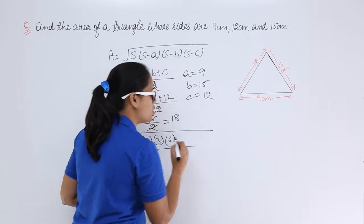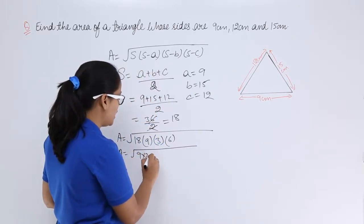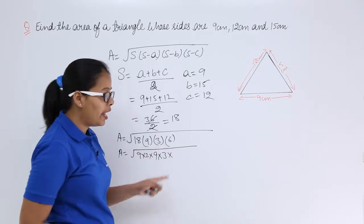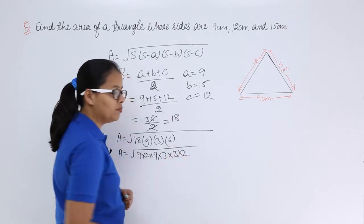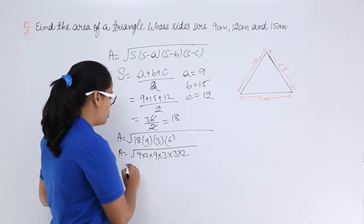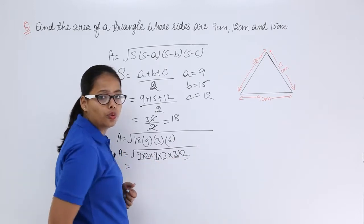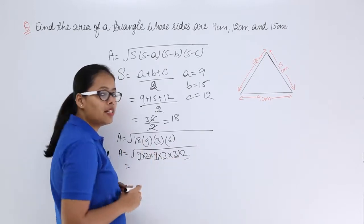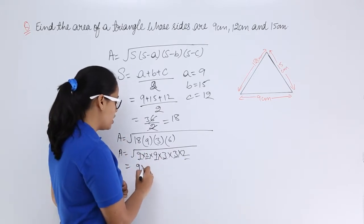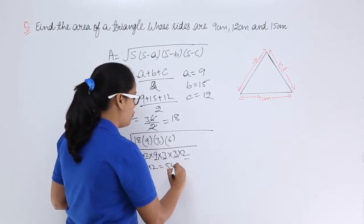Now to simplify this, you can see here 18, you can write 18 as 9 into 2. In multiplication there is already 9, in multiplication there is 3 and you can write this 6 as 3 into 2. So you need not multiply them and take the root of it. So now you can see there are 2 nines, there are 2 threes and there are 2 twos. So 9, there is 9 square under root. So when 9 square comes out of the root, this will become 9, same will apply on 3 as well as on 2. So this will give you 54.